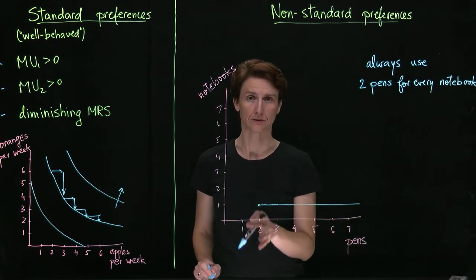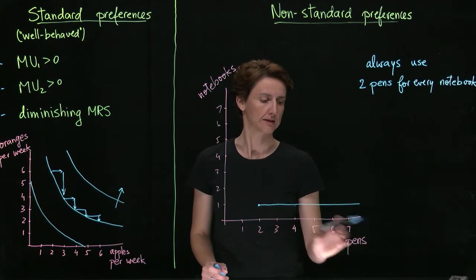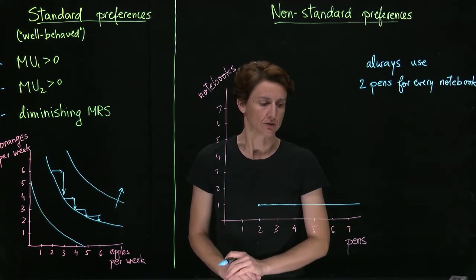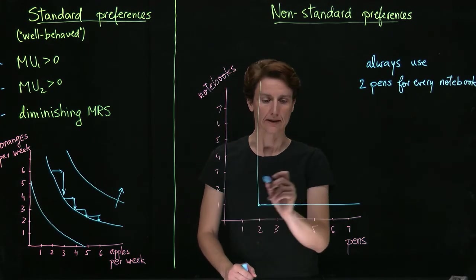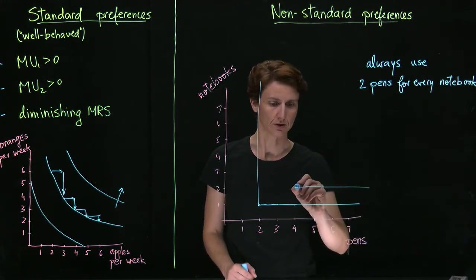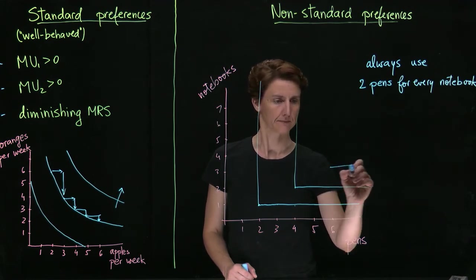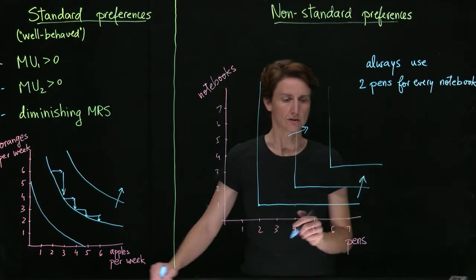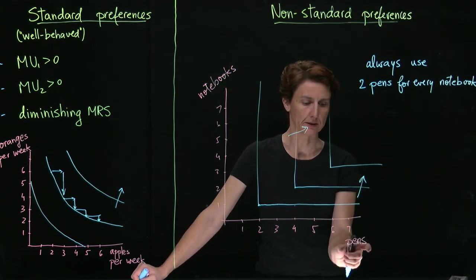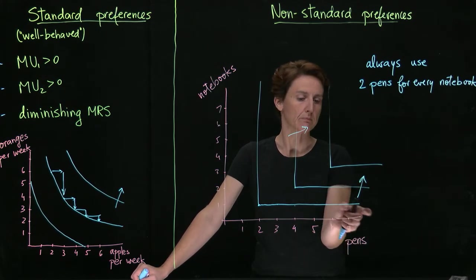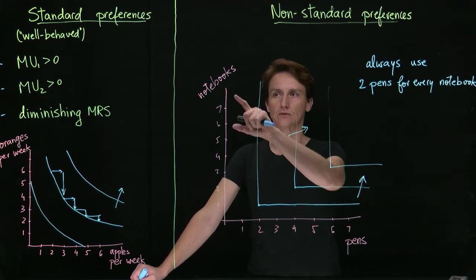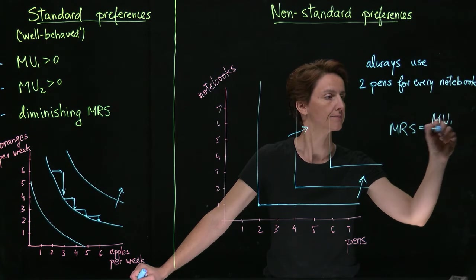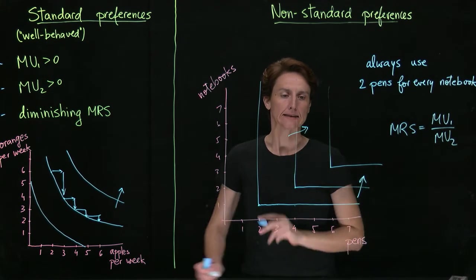Similarly, if we hold the number of pens fixed at two, they won't have any use for extra notebooks because by the time they've used the two pens, they have nothing else to write with. They can be better off if they have four pens and two notebooks - that's another indifference curve where utility is higher, or six and three. So these are all different indifference curves of increasing utility, but in each case the slope is either zero if the marginal utility of pens is zero on these segments, or marginal utility of notebooks is zero on these segments, meaning that MRS is infinite. Remember that MRS is the ratio of marginal utilities. This case is called perfect complements.